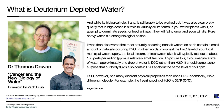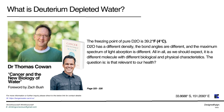'Chemically it is a different molecule. For example, the freezing point of H2O is 32°F (0°C), while the freezing point of D2O is 38.8°F (3.8°C). D2O has a different density, different bond angles, and different maximum spectrum of light absorption. All in all, it is a different molecule with different biological and physical characteristics.' The question is: is that relevant to our health? We will address that in the following section, covering a different book. I do recommend grabbing Cancer and the New Biology of Water.